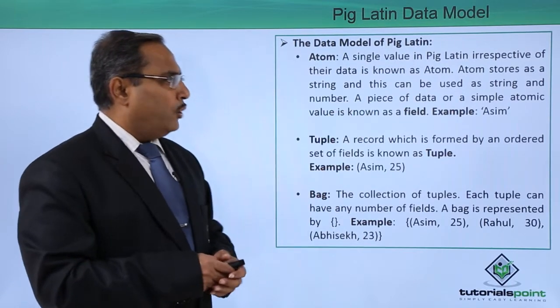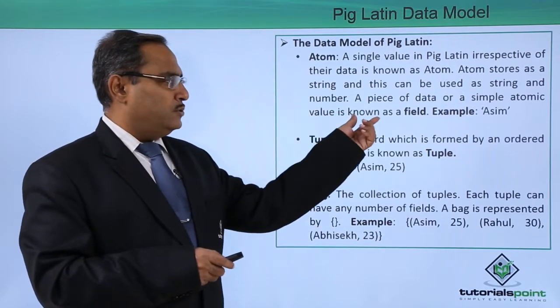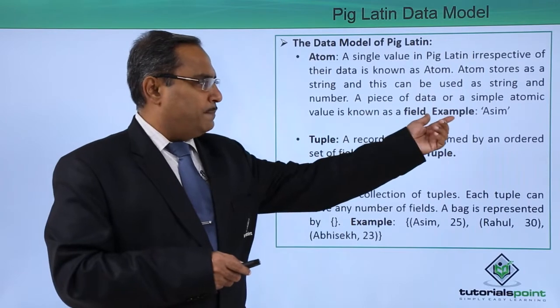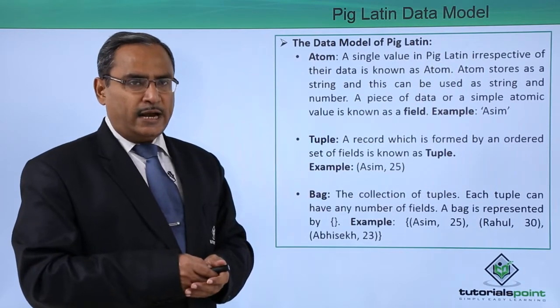A piece of data or a simple atomic value is known as a field. As an example, Asim can be considered as an atom.